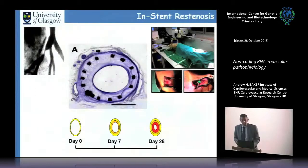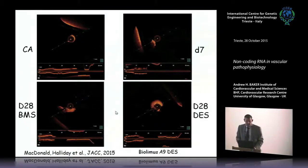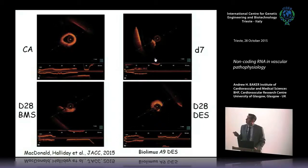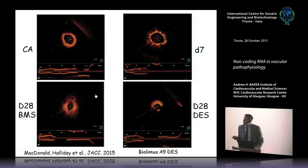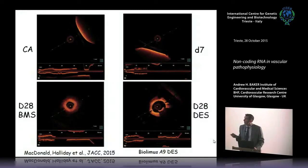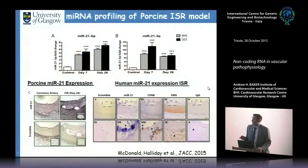We've done the same in in-stent restenosis, in mouse and pig models. In the pig, we use optical coherence tomography to image the carotid artery — showing a normal carotid, then after bare metal stent implantation you can see the expansion and, at 28 days, significant neointima formation. A drug-eluting stent blocks this — producing much smaller neointima — making this a nice imaging technique.